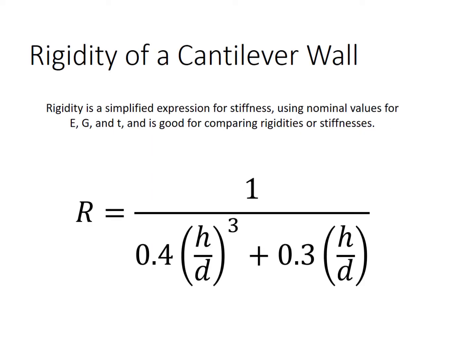Here, we're showing the expression for the rigidity of a cantilever wall. The cantilever wall is the system that we have in our example. What rigidity is, is a simplified expression for the stiffness of an element.